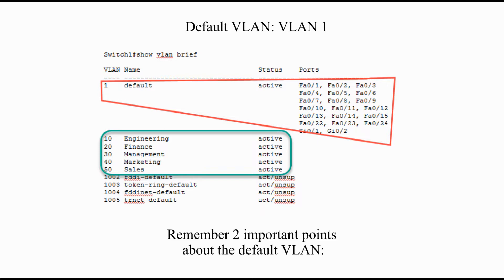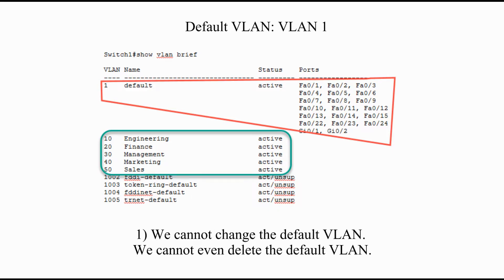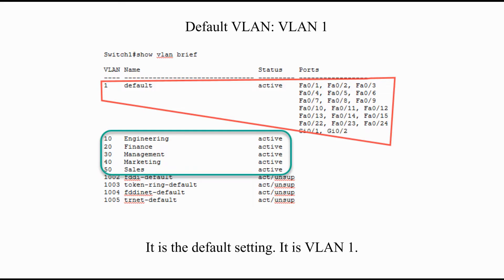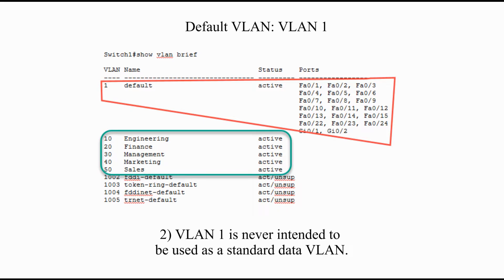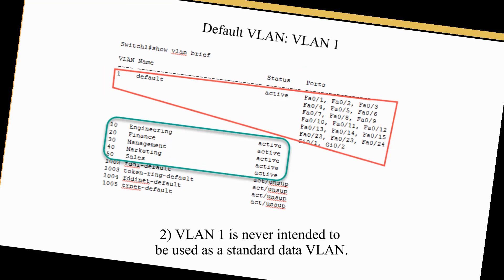Remember two important points about the default VLAN. First, we cannot change the default VLAN — we cannot even delete it. It is a default setting and it is VLAN1. Second, VLAN1 is never intended to be used as the standard data VLAN.